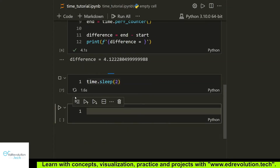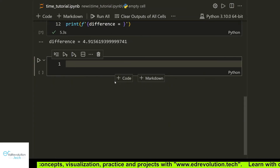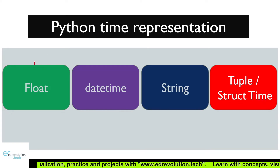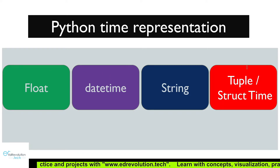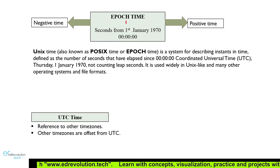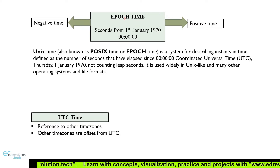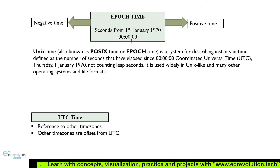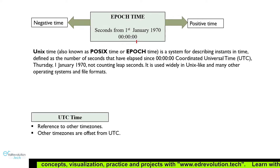Now let's understand the different time representations in Python. We have these major representations available: float, datetime, string, and tuple or struct_time. First, let's understand the float time representation and the concept of epoch time. In Unix or Windows systems, epoch time is a float representing the number of seconds from January 1st, 1970 midnight — so epoch time zero means January 1st 1970 midnight.